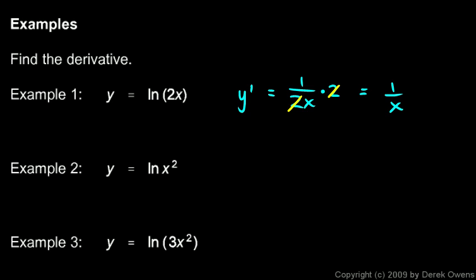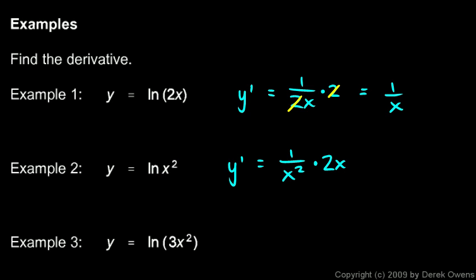Any multiplier inside the natural log would cancel, always leaving 1 over x. Example 2: y equals the natural log of x squared. y-prime is one over x squared times the derivative of x squared, which is 2x. That gives 2x over x squared, and the x cancels one from the denominator, leaving 2 over x. Example 3: y equals the natural log of 3x squared.